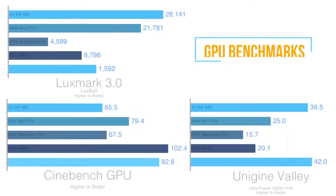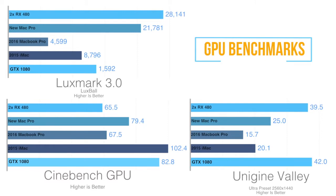Looking at synthetic benchmarks here, you can tell that the GTX 1080 is definitely the most powerful system. If you were to have two of them, the LuxMark score would top out the 480s. And in CineMedge, it really comes down just to driver optimization, losing out to the 2015 iMac for whatever reason.